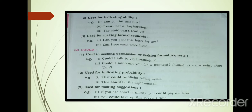Can is used for making formal requests. Can you post this letter for me? Can I see your price list? Next modal auxiliary: Could. Could is used in seeking permission or making formal requests. Example: Could I talk to your manager?